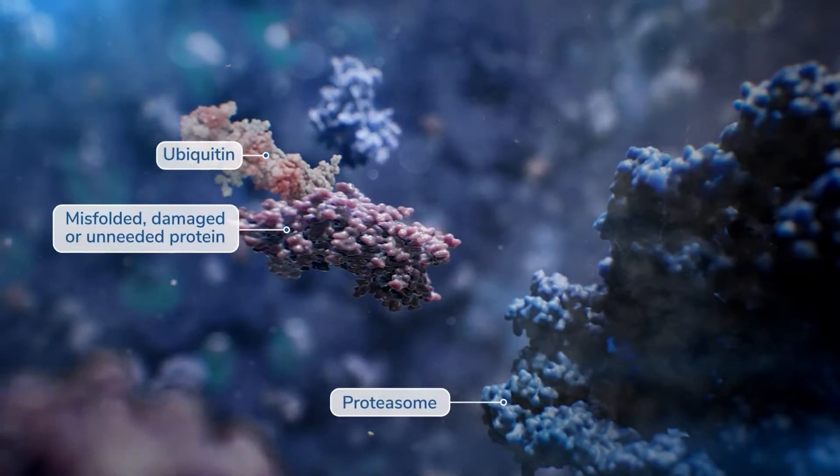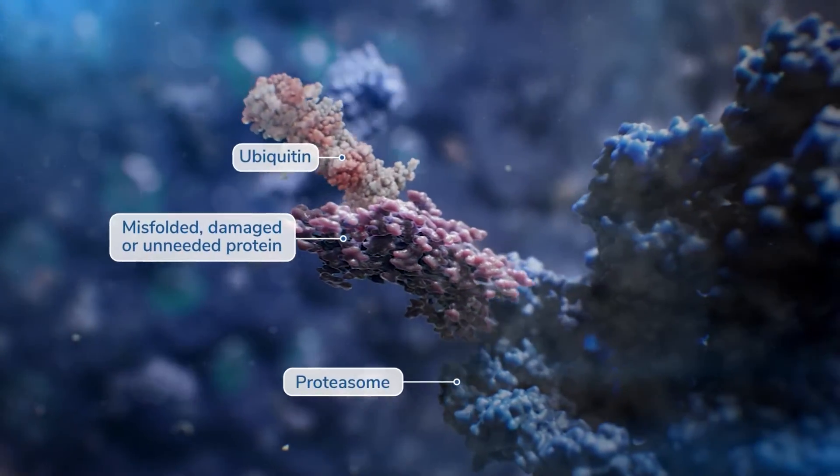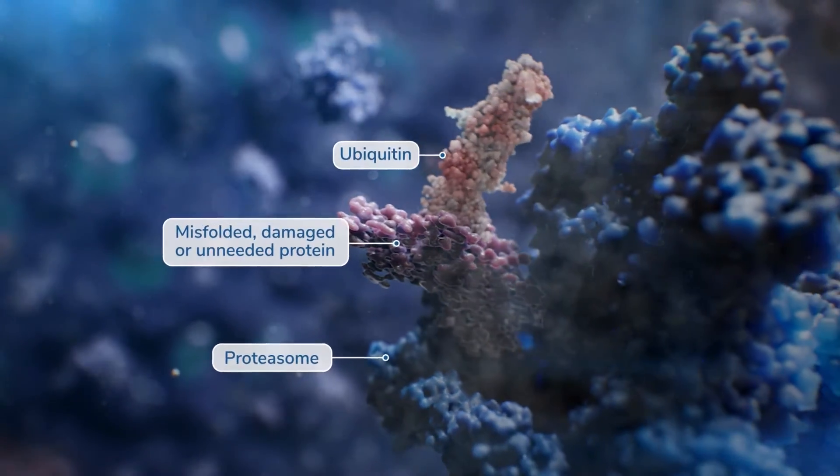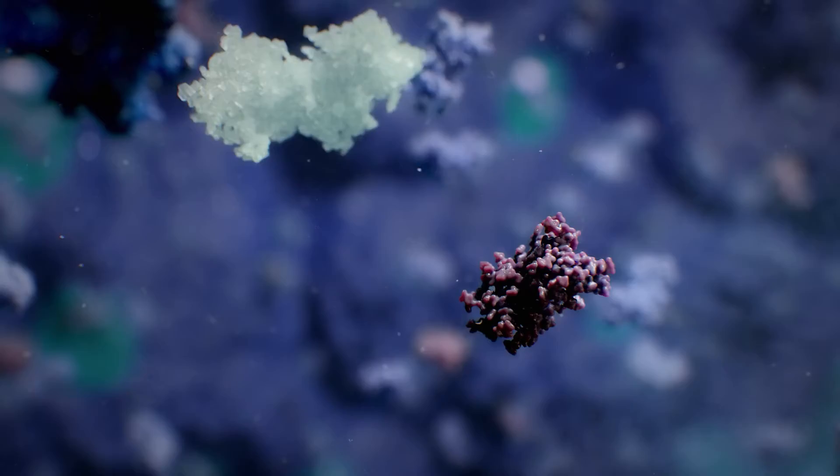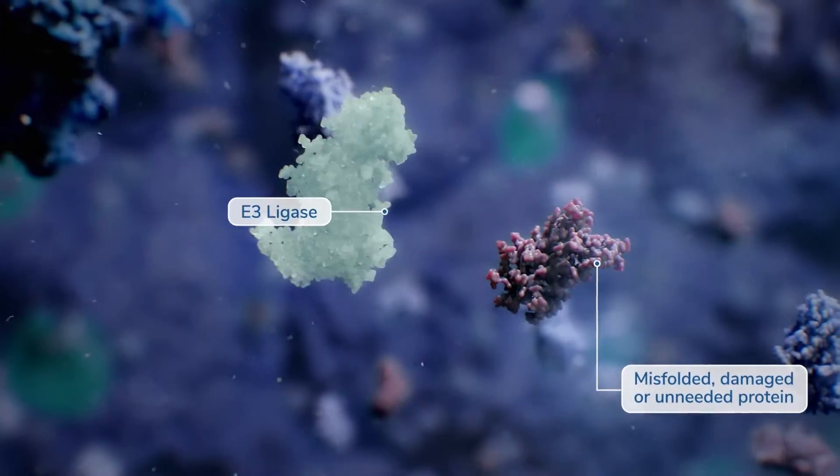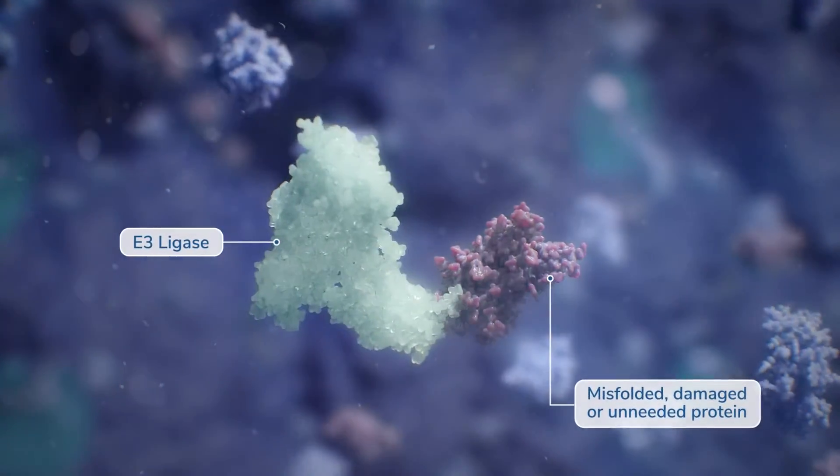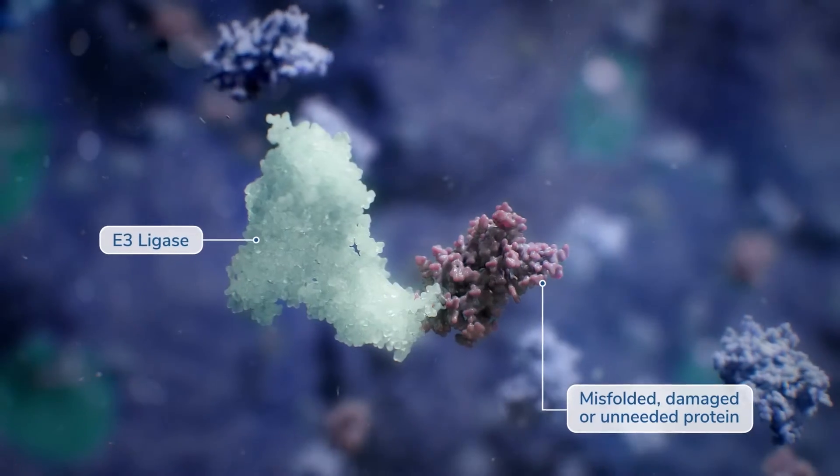The ubiquitin proteasome system is one of the cell's primary mechanisms for protein degradation. Here, a key component of that pathway, the E3 ligase complex, recognizes misfolded and unneeded proteins.